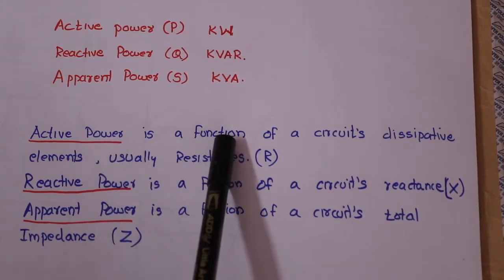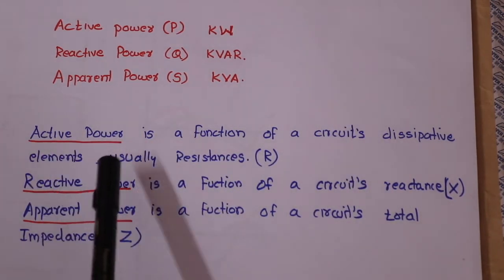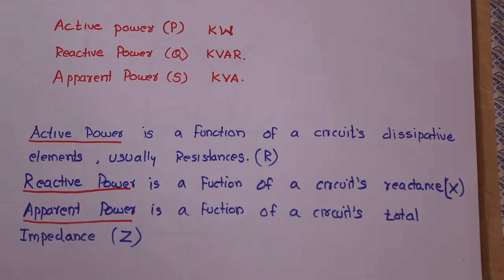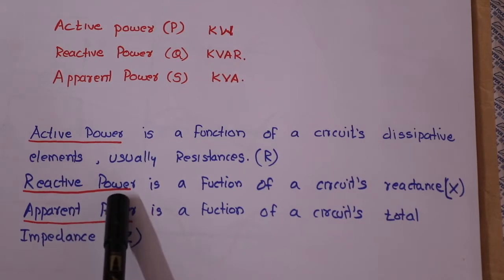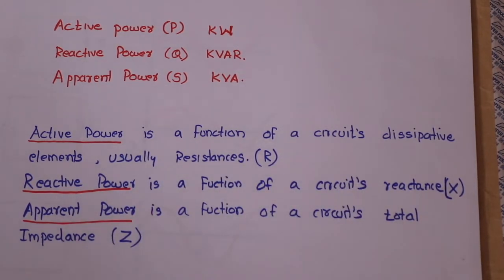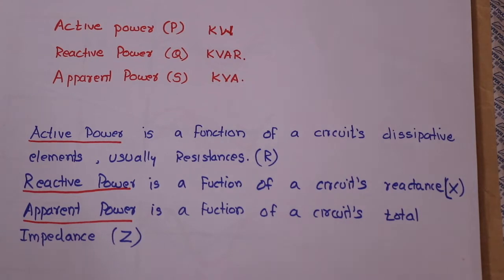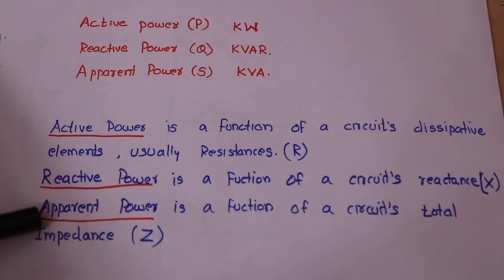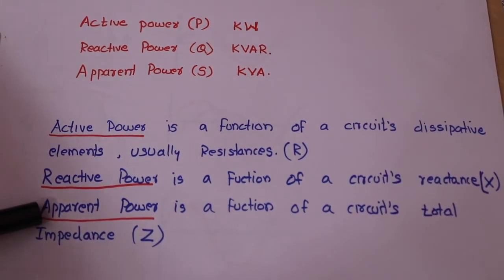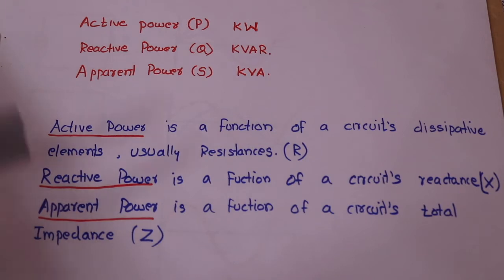Active power is a function of the circuit's dissipative elements, usually resistance. Reactive power is a function of the circuit's reactance — reactance being capacitors and inductors. Apparent power is a function of the circuit's total impedance, which is the result of both reactance and resistance combined.